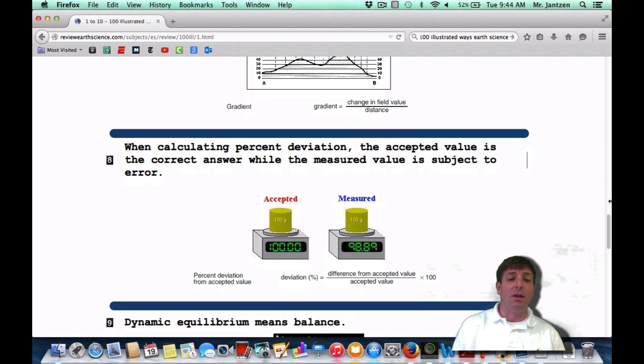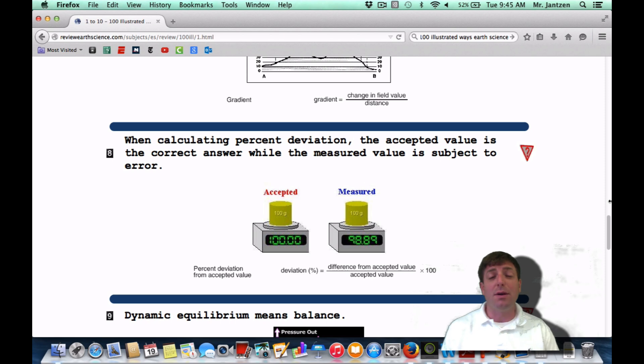Okay, moving right along. We're going down to number eight. Percent deviation. A note on this: this was taken off the reference tables after 2011. It's still a very important concept, though. When calculating percent deviation, the accepted value is the correct answer, while the measured value is subject to error.